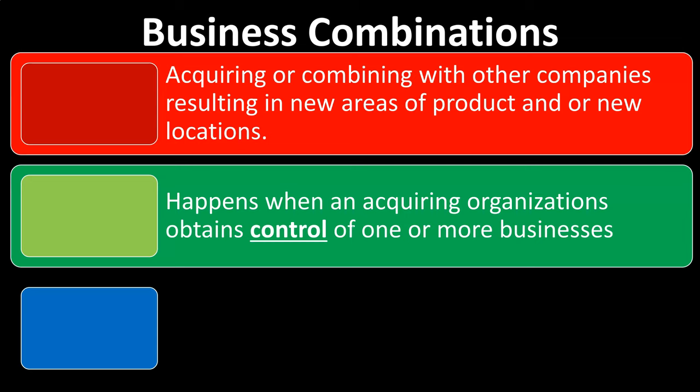A key concept when we talk about business combinations is control. If one entity is consumed by another and is now part of that one legal entity, then that other legal entity that was once separate is now legally consumed or owned. There's no question about control typically in that type of situation.